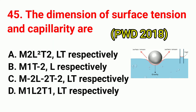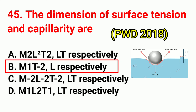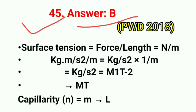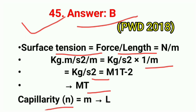Question No. 45. The dimensions of surface tension and capillarity are? Correct answer is option B: M¹T⁻² and L respectively. Surface tension = force/length = Newton/meter = kg·m/s² / m = kg/s² = M¹T⁻². Capillarity (rise/fall height) has dimension of L.